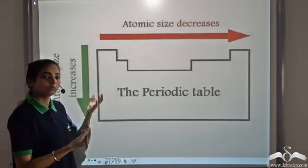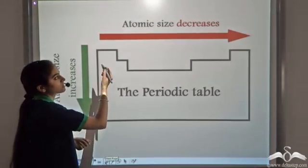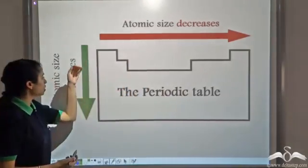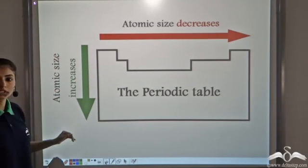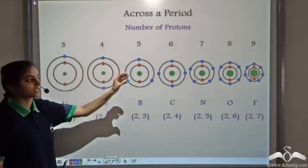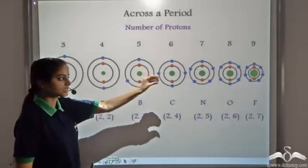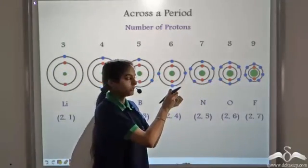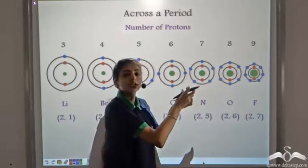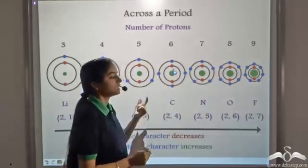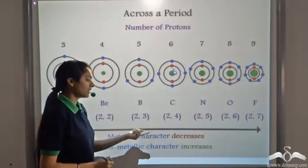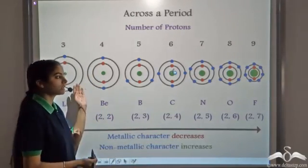How does metallic character vary in a periodic table? Atomic size decreases when we move from left to right in a period, and atomic size increases when we move from top to bottom in a group. In a period, since the atomic size decreases, the outermost shell is very close to the nucleus, so removing an electron becomes very difficult because the nucleus exerts a very great pull on the outermost electrons. Therefore, the ease to remove the electrons decreases and thus the metallic character decreases. Since the metallic character decreases, the non-metallic character increases across a period.